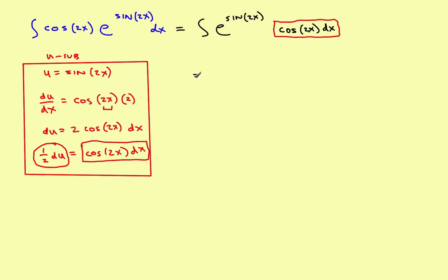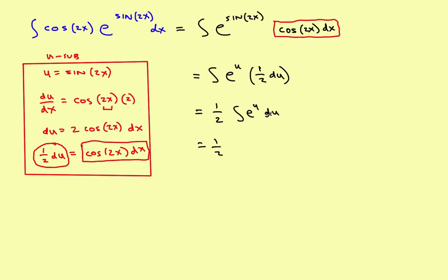The integral becomes the integral of e to the u times one-half du. Bringing the one-half outside gives one-half times the integral of e to the u du. The antiderivative is e to the u plus c. Replacing u with sine of 2x gives the final answer: one-half e to the sine of 2x plus c.